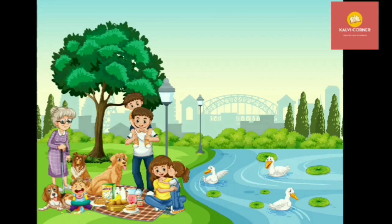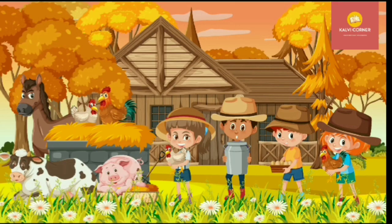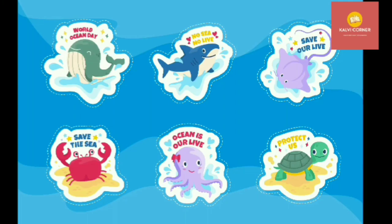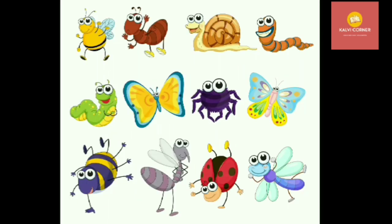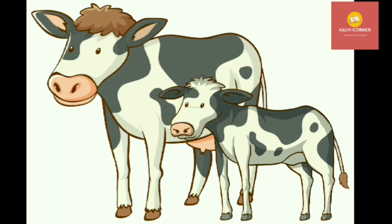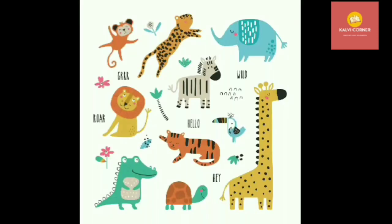Some animals live with us. Some animals live in farms. Some other animals live in oceans. We can see different categories in animals. Some animals are big. Some animals are small. And some other animals are mammals, which give birth to young ones. Come children, let us learn about the big animals.